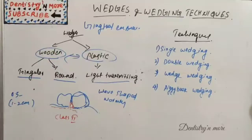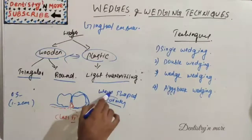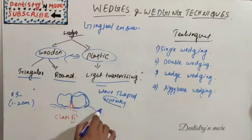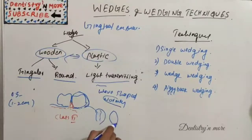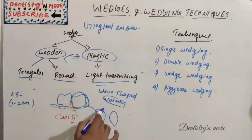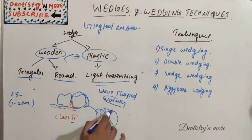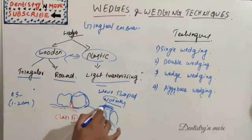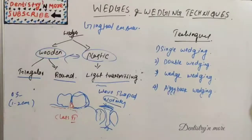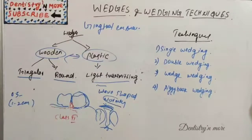Wave-shaped wedges are available in small, medium, and large sizes. If we have two teeth here, the buccal embrasure is on one side and the lingual embrasure on the other. The wave-shaped wedge will easily adapt to both the buccal and lingual embrasures.